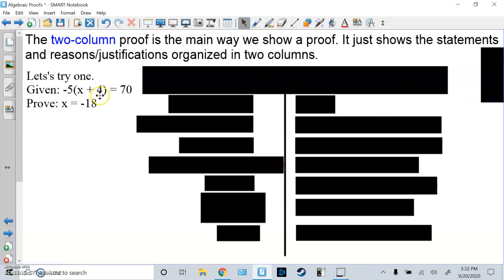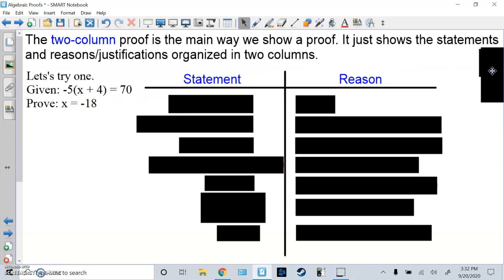So let's try a problem. Given -5(x + 4) = 70, prove that x = -18. So we make a t-chart, left side statements, right side is reason. If you want to abbreviate S and R, that's fine. So everything we write on the left side, we must have a reason on the right side. So first I'm going to write the problem. Now why was I allowed to write the problem? That's because it was given to me. The first reason of a two-column proof is always given, no matter what.